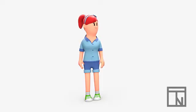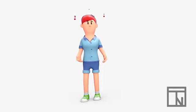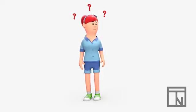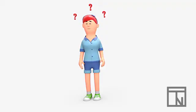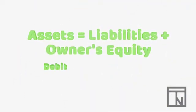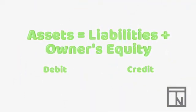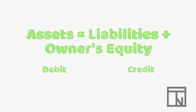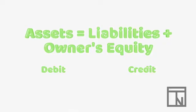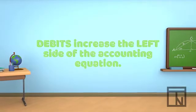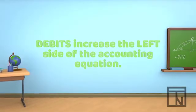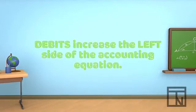So, how do you decrease an account if you aren't allowed to use negative numbers? That was the conundrum that the experts at the time had to figure out. Their solution was simply to create two different types of numbers — one number that increased the left side of the accounting equation and one number that increased the right side. The number that increases the left side, so assets, was called a debit.